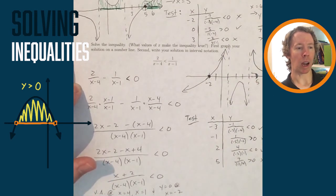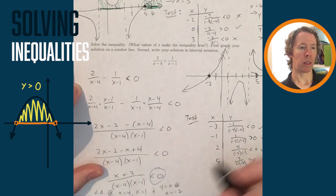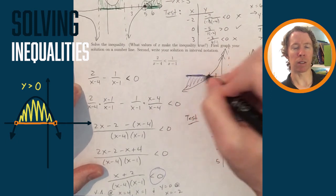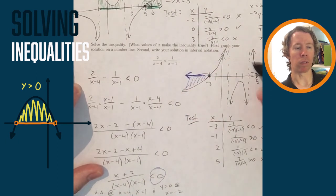So now I go back to my inequality. I wanted to know where the y values are less than 0. And that happens in two pieces: to the left of negative 2 and then between 1 and 4.